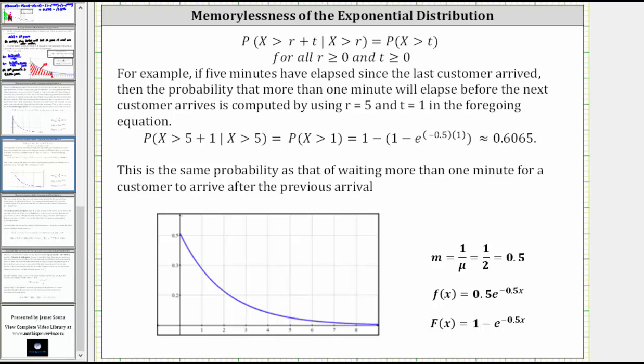Let's model this probability using area under the probability density function graphed below. Well, x equals one is here. Since we want the probability that X is greater than one, we want the area under the curve to the right. But remember, the cumulative distribution function, big F of x, gives us the area to the left, not the right.